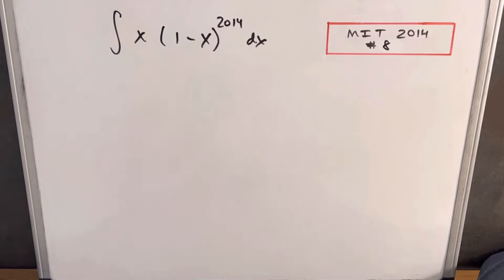Hey, we have here today another integral on the board. This one's from MIT Integration B 2014, problem number 8. We have the integral of x times (1 minus x) to the 2014 dx.